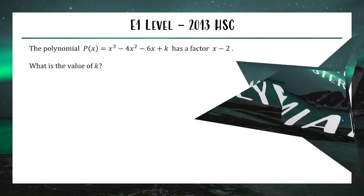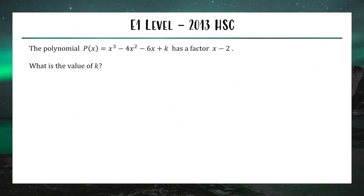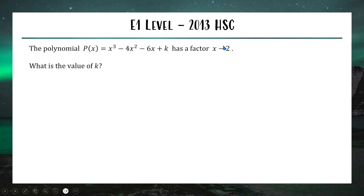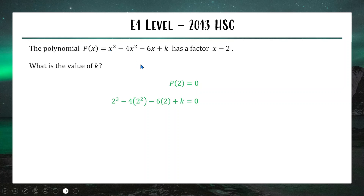Let's kick it off with a nice easy one from the 2013 exam — an E1 level question, as basic as you can get. This was the first question in the multiple choice. Starting off with a polynomial with an unknown value called k, and we're told it has a factor x minus 2. What is the value of k? As long as you know your factor theorem, this is very easy — when x minus a is a factor, subbing a into the polynomial gives a remainder of 0.